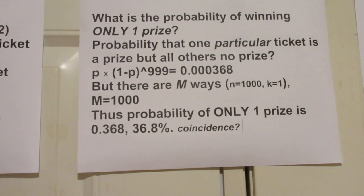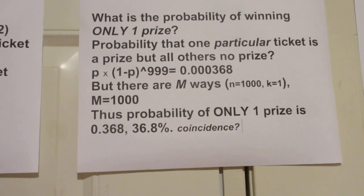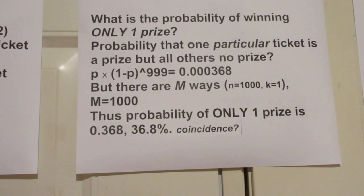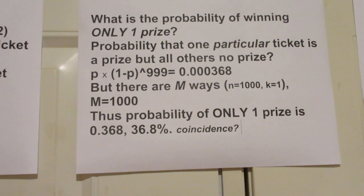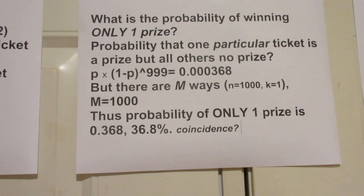You will say, what a coincidence — that is also the probability of zero prizes. Well, yes, that is a coincidence. If you go to four-digit precision, you will see the two numbers are not identical. If there were 2000 lotteries with a thousand tickets each, the two numbers would not be as close. So the fact that both give 36.8% is a consequence of the specific numbers chosen; it does not hold in general.